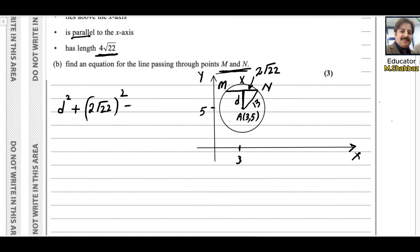d² + (2√22)² = 13². d² = 169 - 88. This is 4 times 22, which is 88. d² = 81, and the square root of 81 is 9.